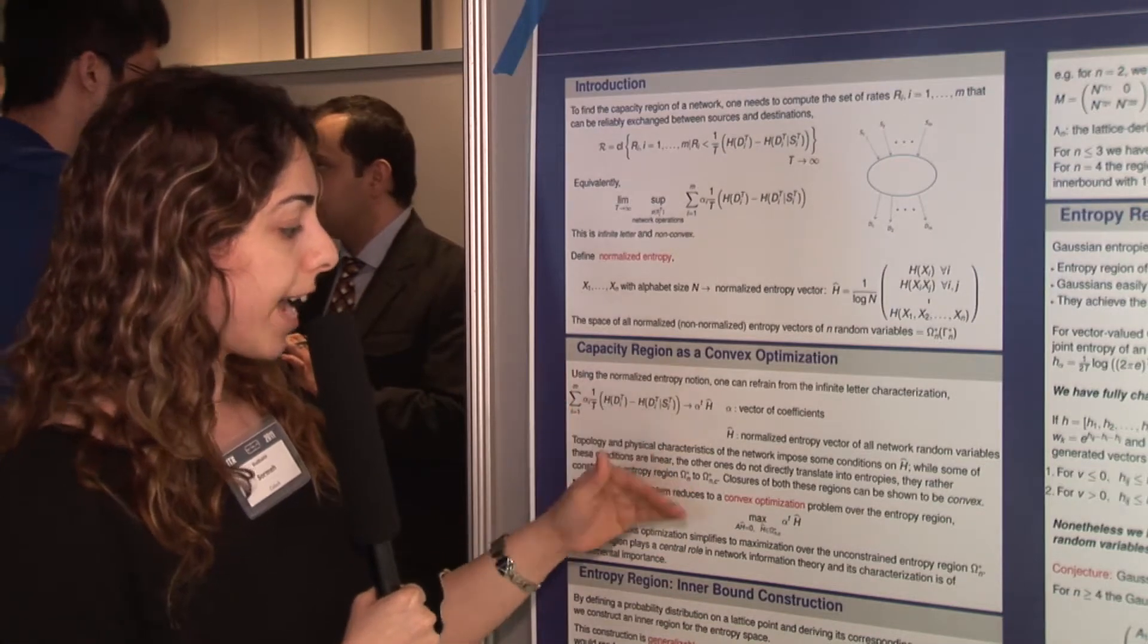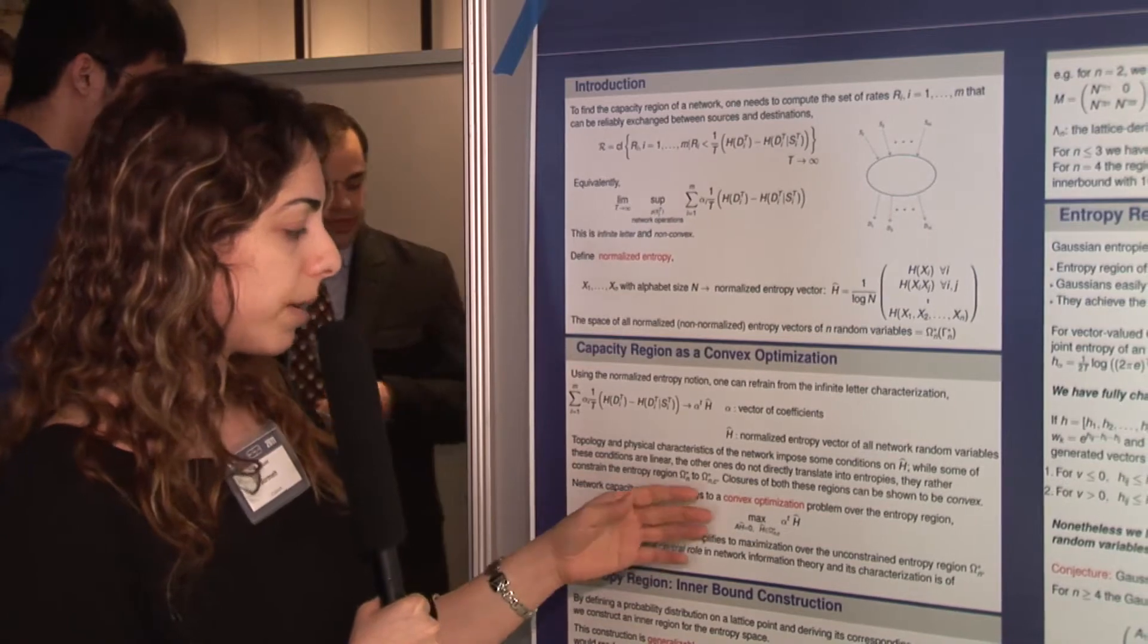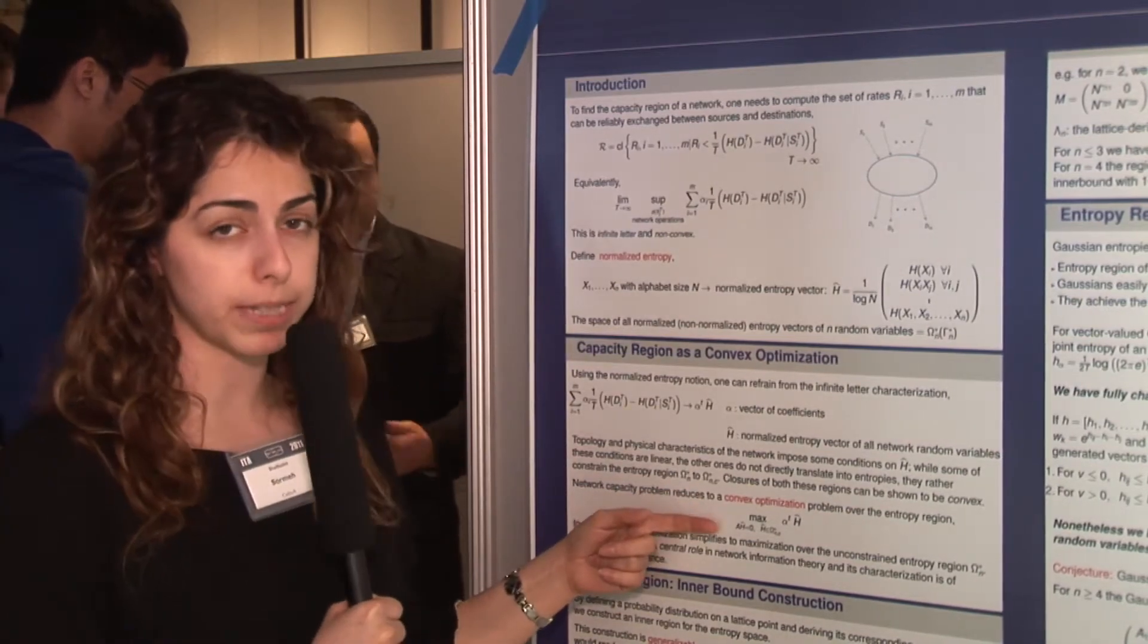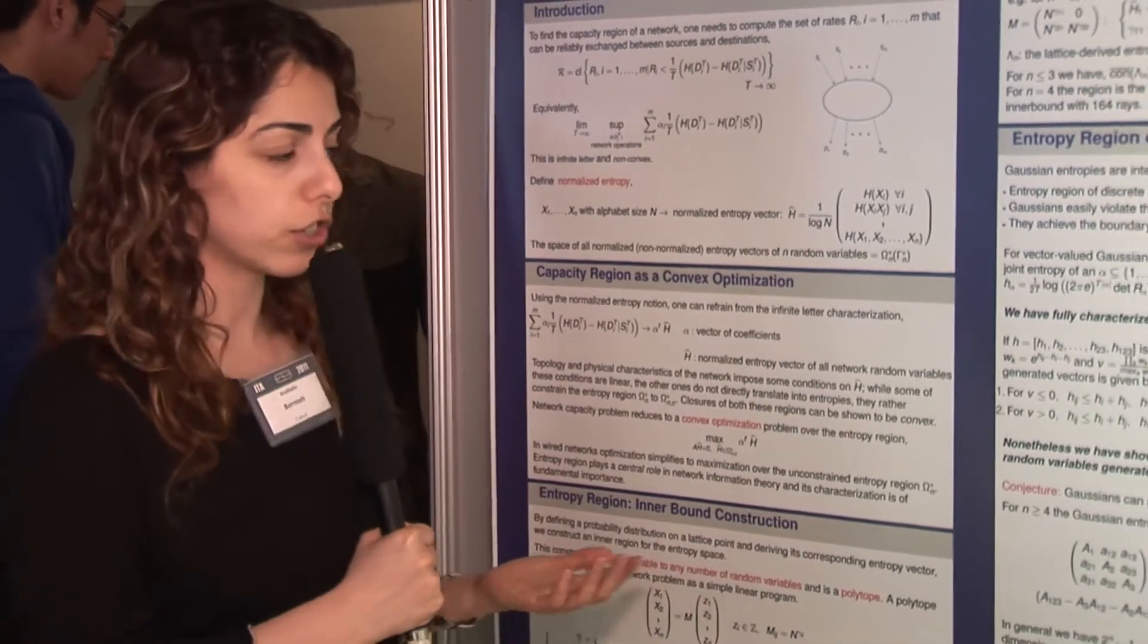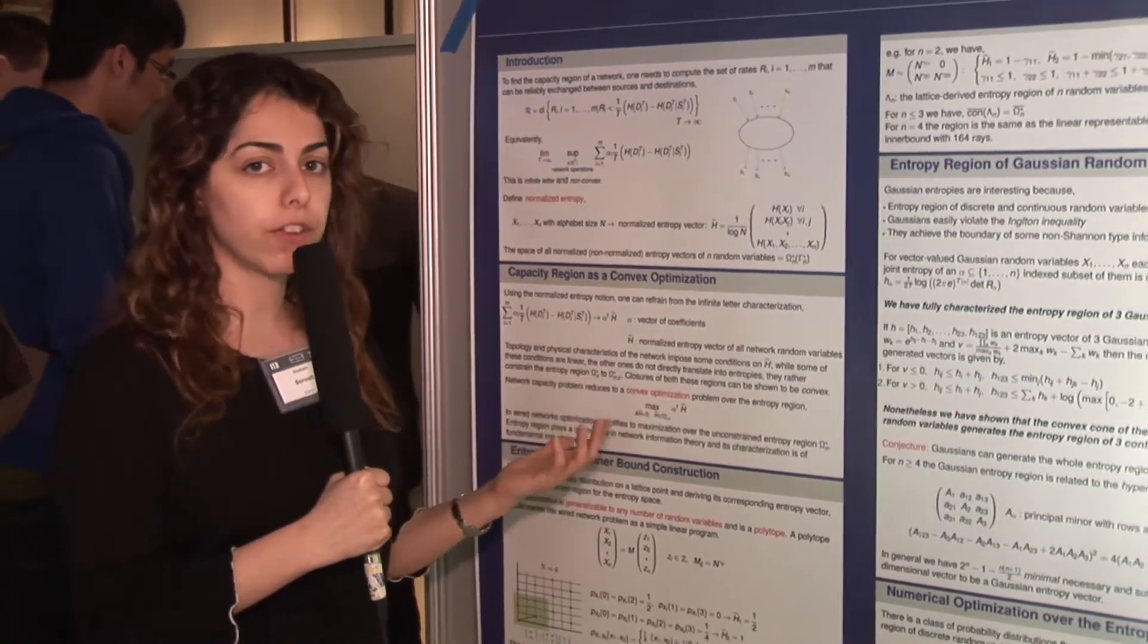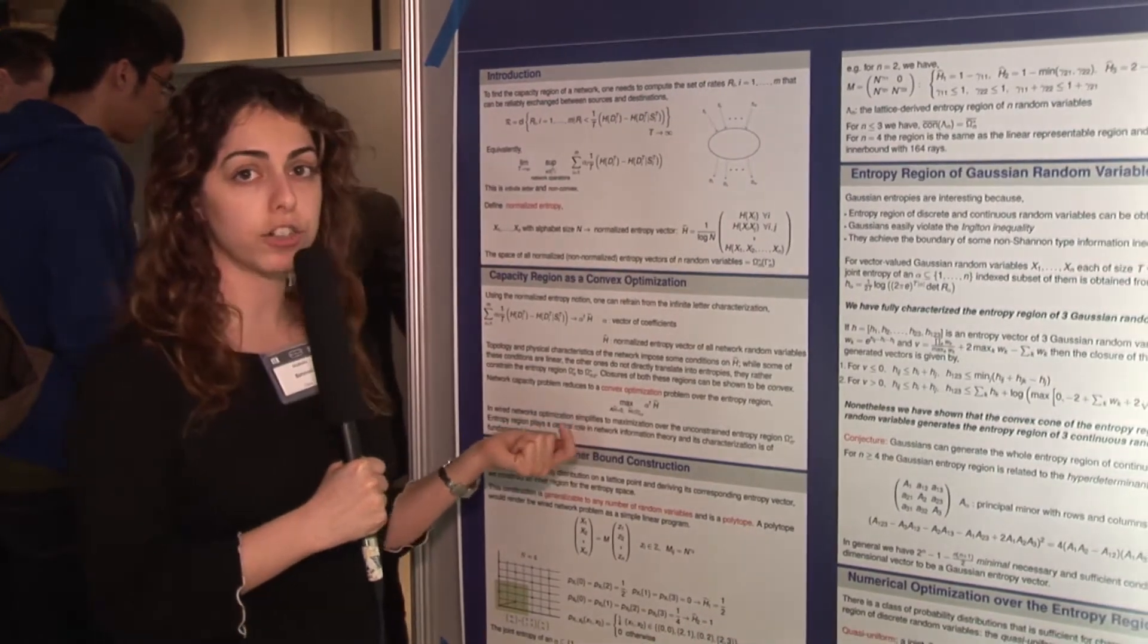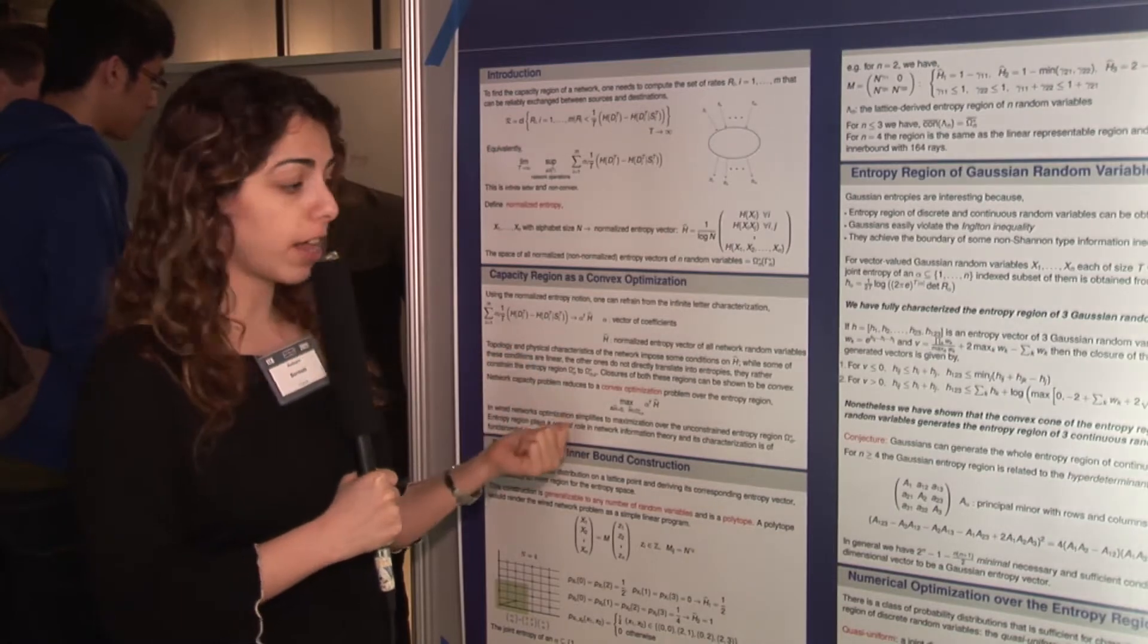We can formulate the capacity region of a general network information theory problem as a convex optimization over the entropy region, which is the space of all entropy vectors. This formulation reveals the importance of characterization of the entropy region in determining the capacity of general networks.